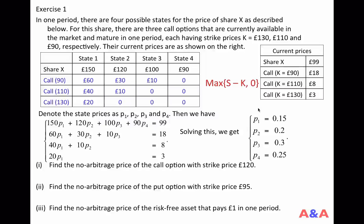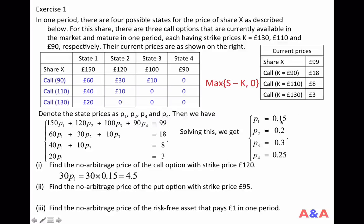Once you have the state prices, you can price any asset. For the call option with strike price 120 pounds, in states 2, 3, and 4 this option is worthless. Only in state 1 does it have value: 150 minus 120 equals 30 pounds. So this call option is a basket of 30 units of state 1 contingent claims only, giving a theoretical price of 30 × P1 = 30 × 0.15 = 4.50 pounds.